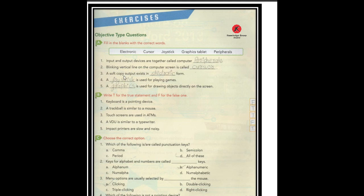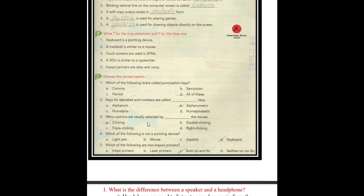Now let's solve the Chapter 1 exercises. Fill in the blanks: Input and output devices are also called computer peripherals. The blinking vertical line on the computer screen is called a cursor. A soft copy output exists in electronic form. A joystick is used for playing games. A graphic tablet is used for drawing objects directly on the screen. True or False: Keyboard is a pointing device — False. A trackball is similar to a mouse — True. Touch screens are used in ATMs — True. A keyboard is similar to a typewriter — False. Impact printers are slow and noisy — True.